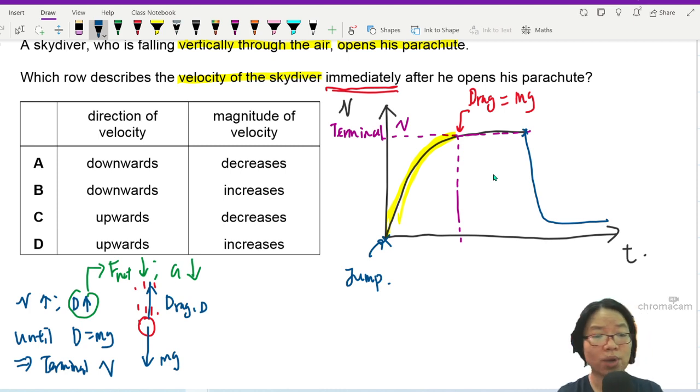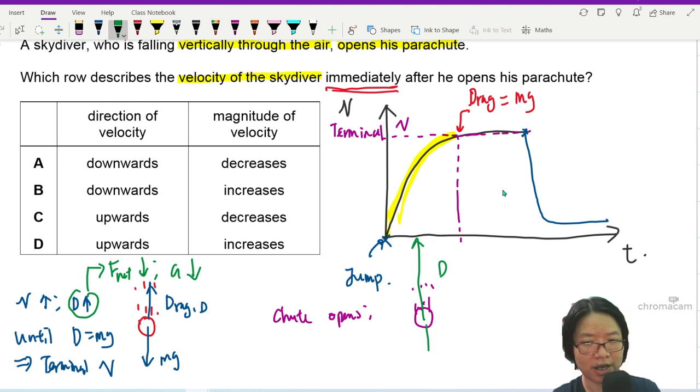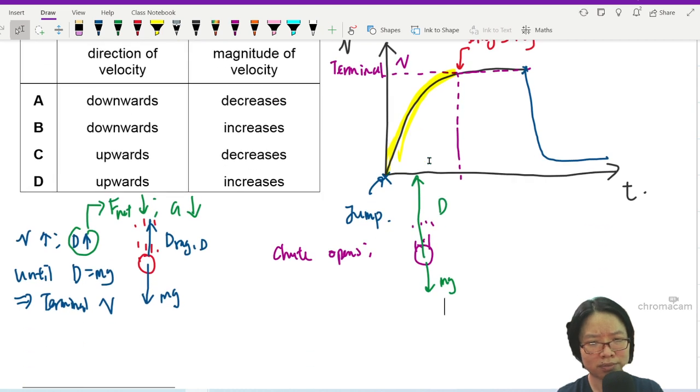When you open the parachute, your drag becomes very big. If your drag becomes very big and your mg is still the same value, drag increases. Because of this, drag is very much bigger than mg.